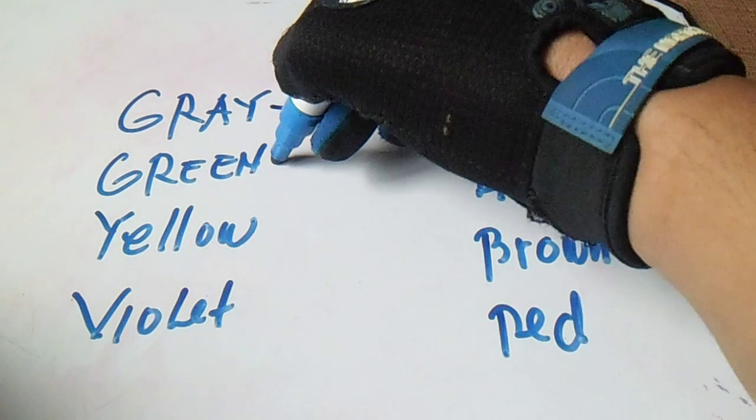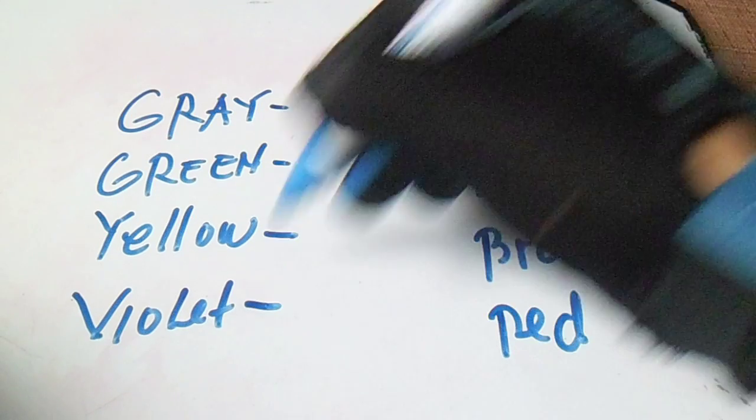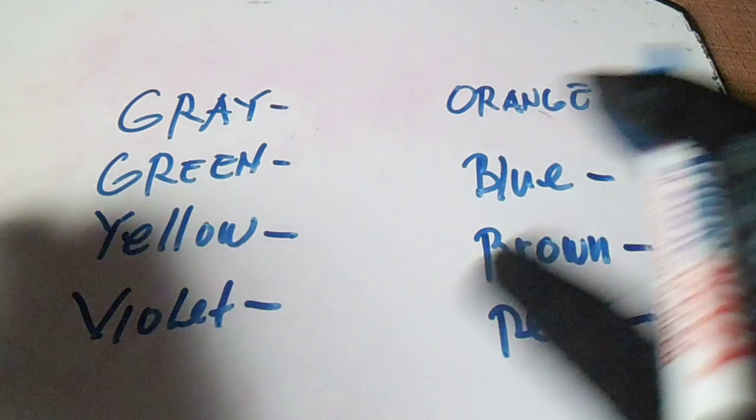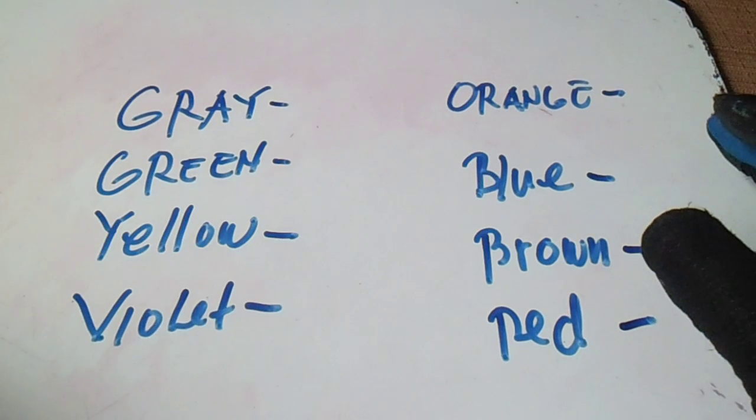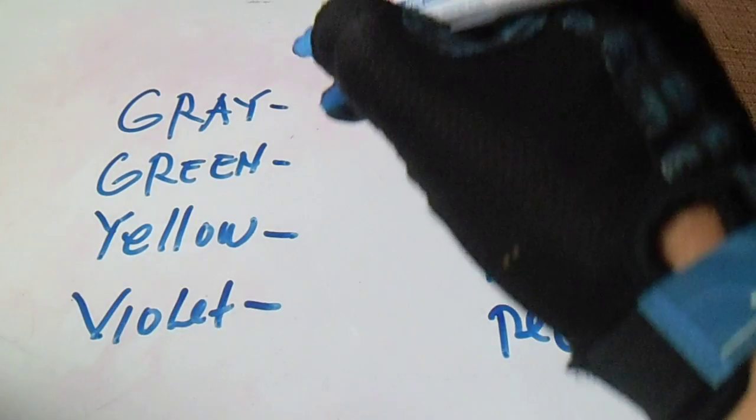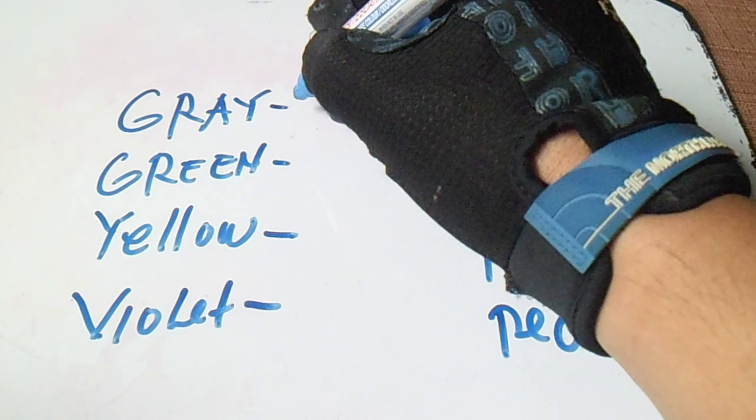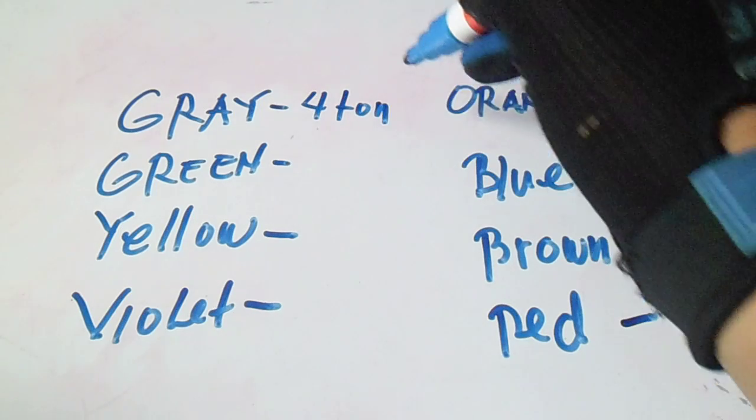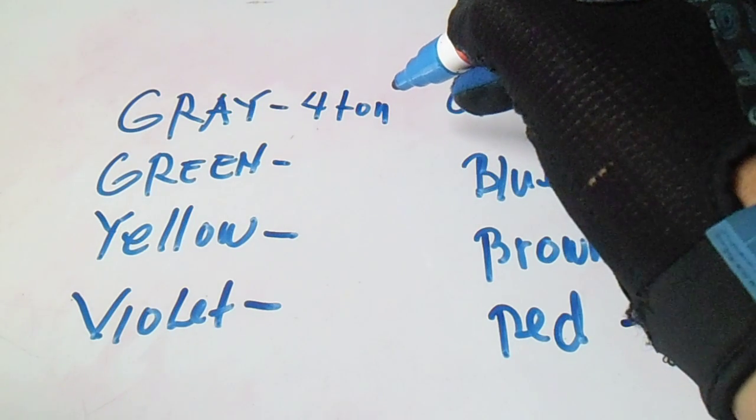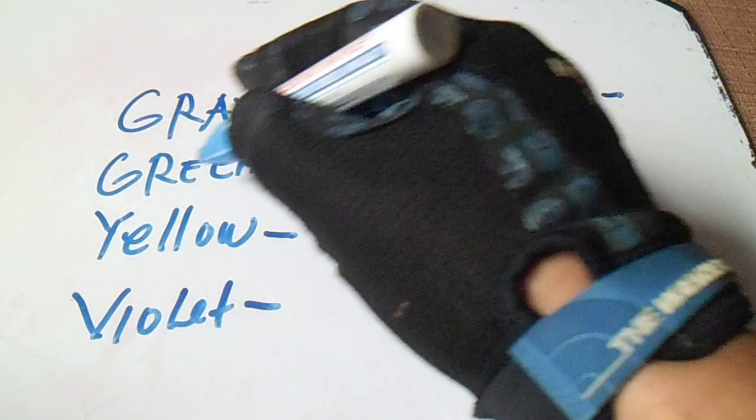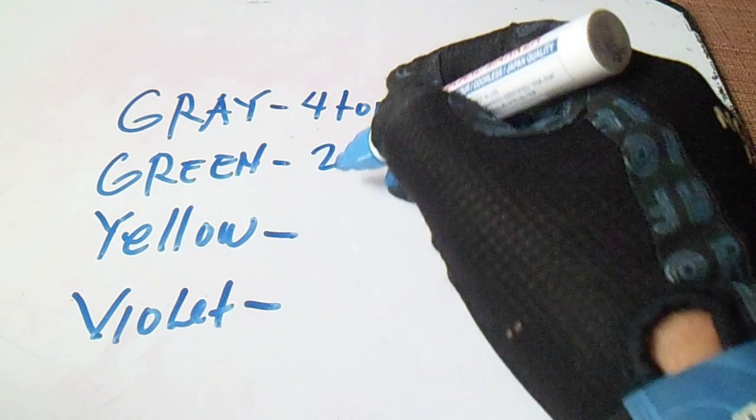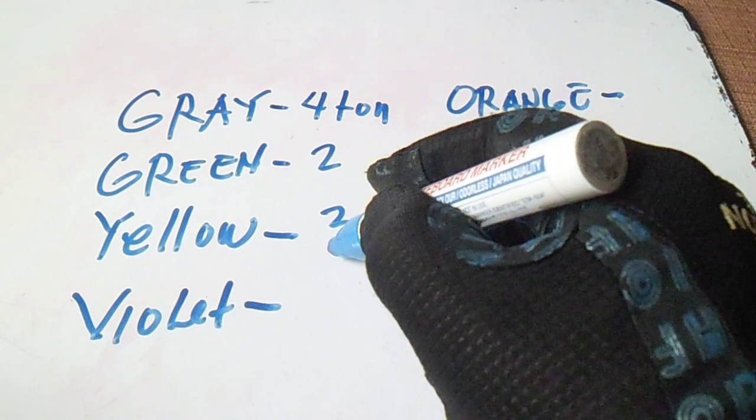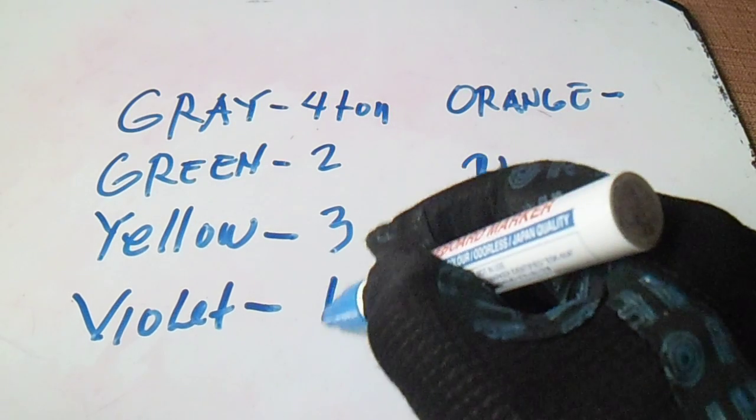They have different sizes of sling and different tons. First, gray is four ton. Green is two ton. Yellow is three. Violet is one.